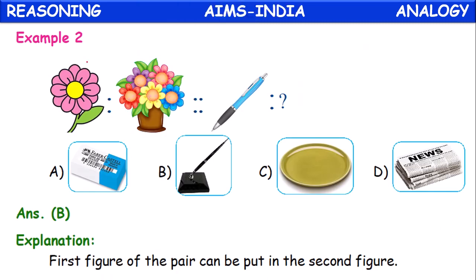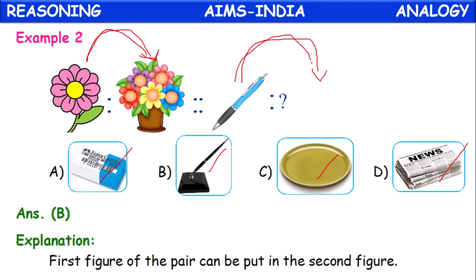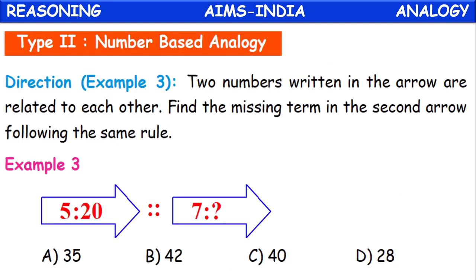Second example: If flower is related to flower pot, then pen is related to what? The options are eraser, pen stand, plate, or newspaper. As flowers are kept in a flower pot, pen should also be kept in a pen stand. Option B is the correct answer.